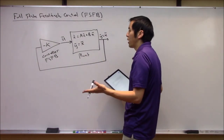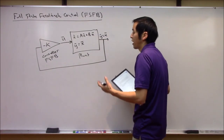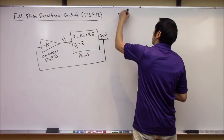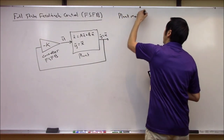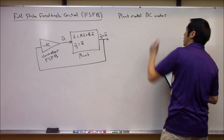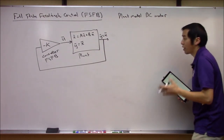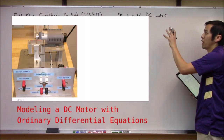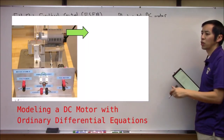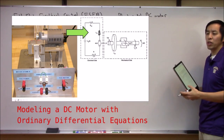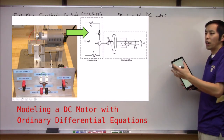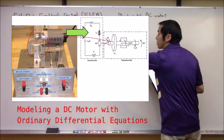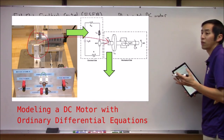I always like to look at concrete examples because I think that helps with the analysis, so let's look at a plant model of a DC or direct current motor. In another video we have a derivation and explanation of the ordinary differential equations and how to model a DC motor, and we also talk about how to generate the linear state space model for it.